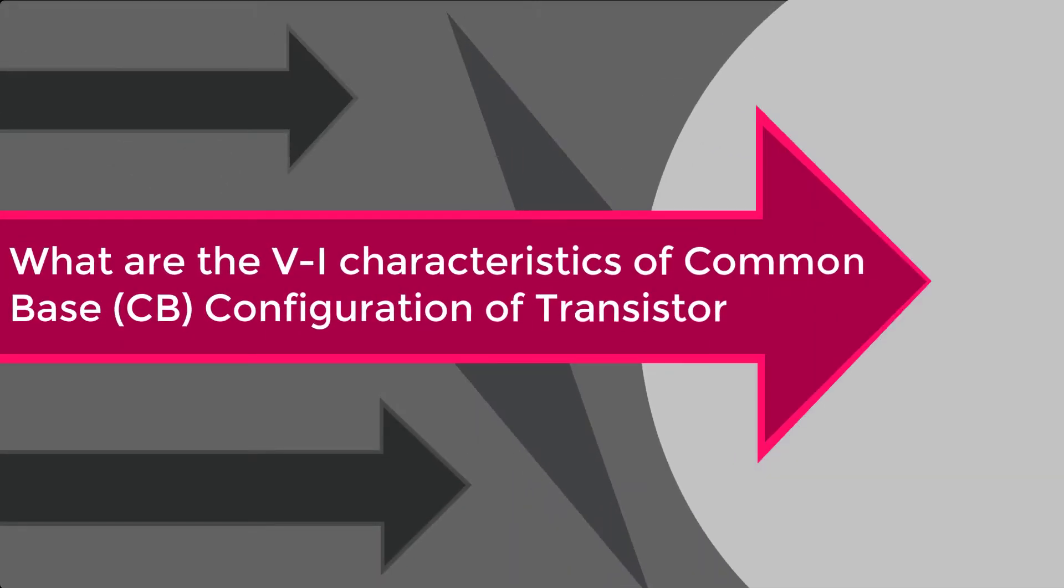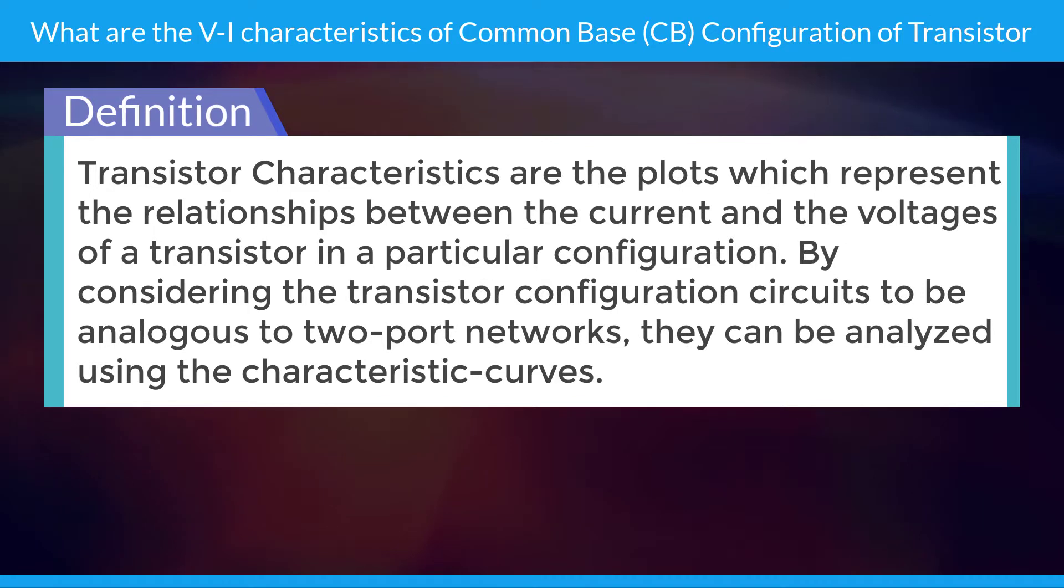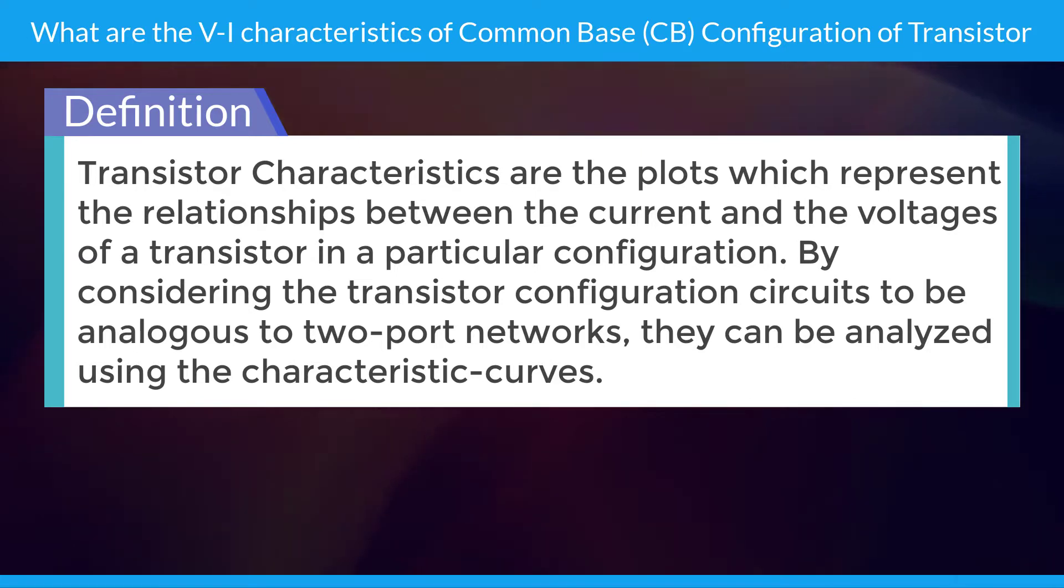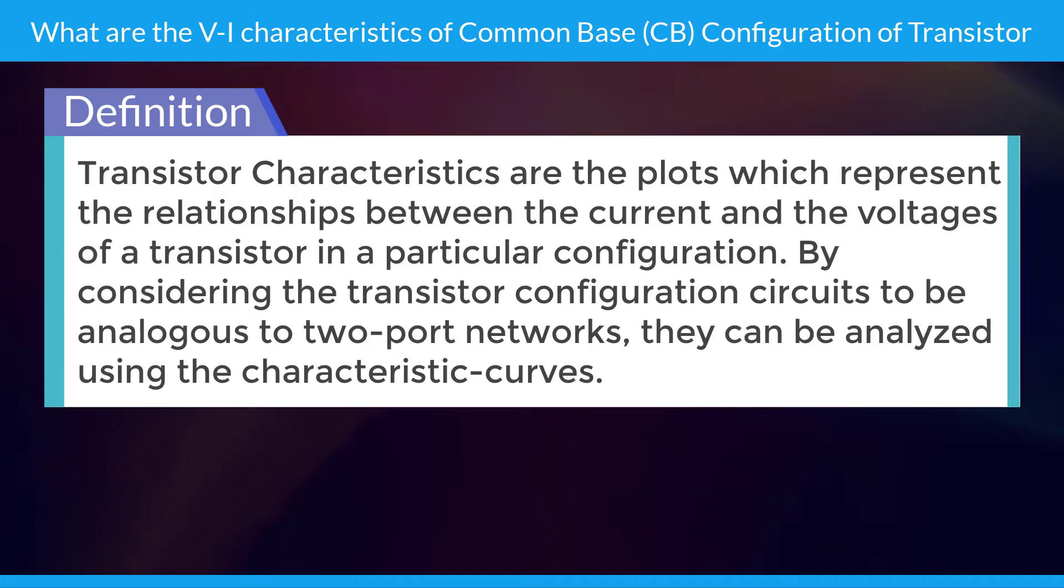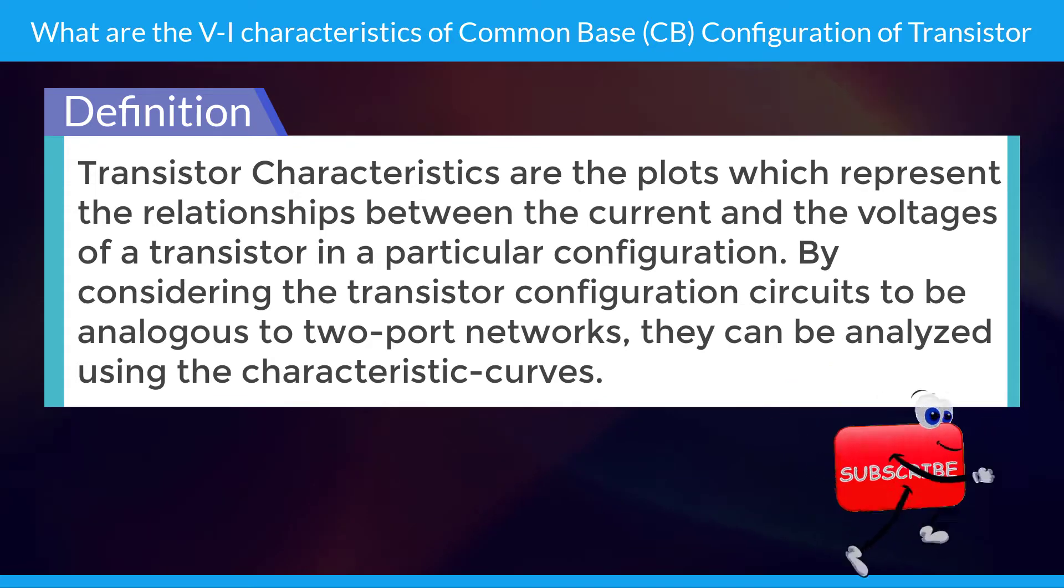What are the V-I characteristics of common base CB configuration of transistor? Transistor characteristics are the plots which represent the relations between the current and the voltage of a transistor in a particular configuration. By considering the transistor configuration circuits to be analogous to two-port networks, they can be analyzed using the characteristic curves.